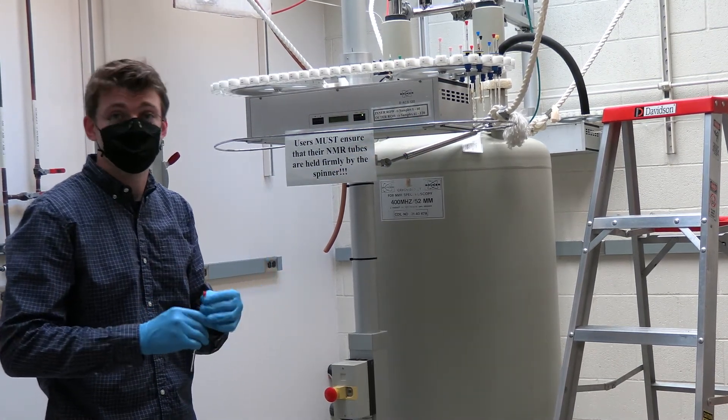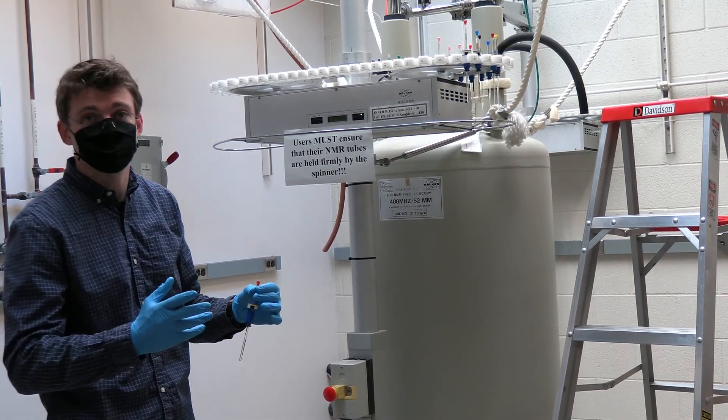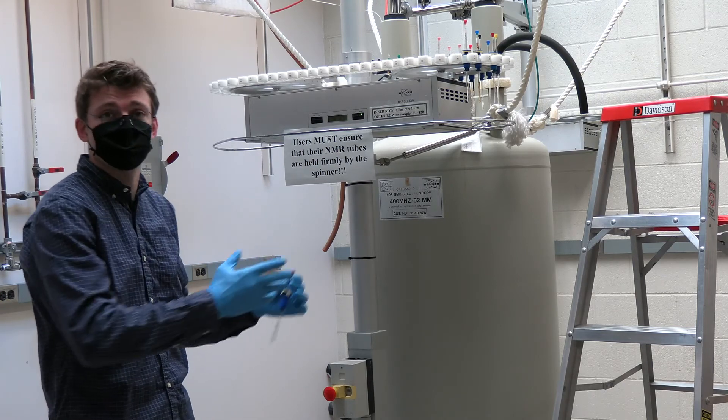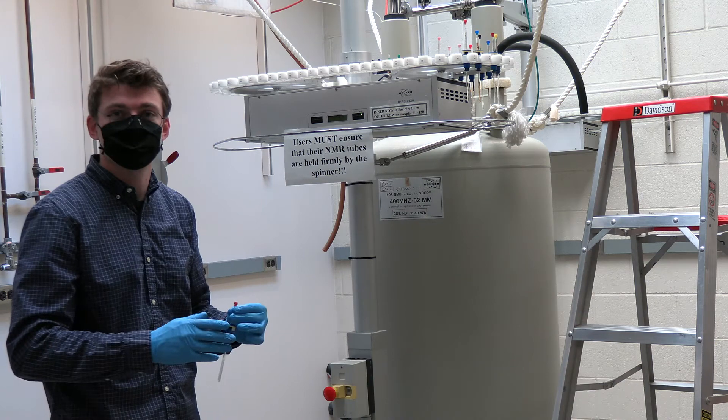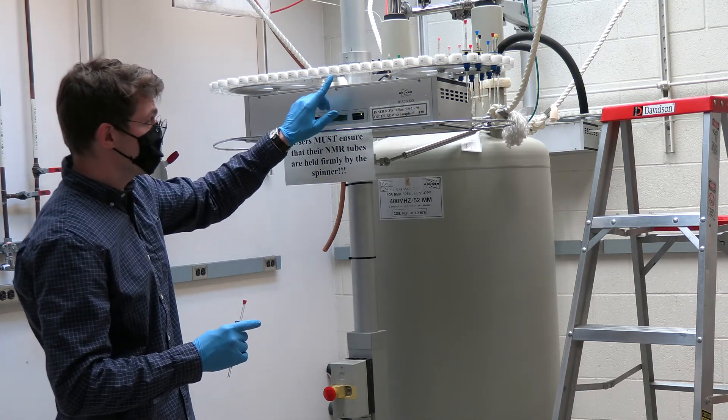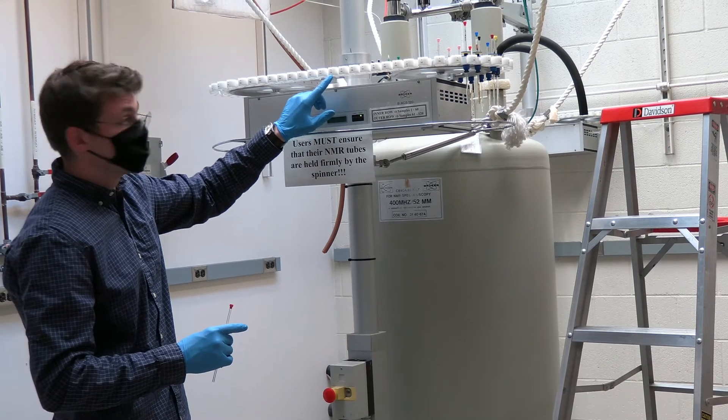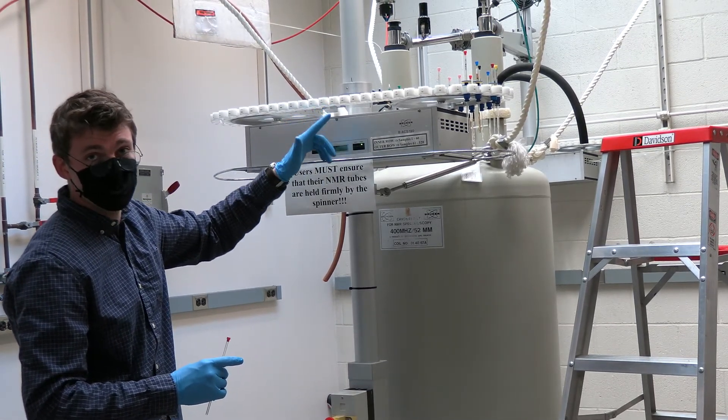Throughout a given day we run samples sequentially 1 through 120. This makes it easy for users to quickly access where their samples should be placed while also allowing for easier use of the software. Each position is labeled with two numbers. The top number corresponds to the inner row while the bottom number corresponds to the outer row.